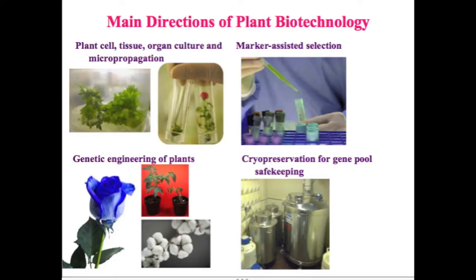There are four main directions of plant biotechnology: number one is plant cell, tissue, organ culture and micropropagation; number two is marker assisted selection; number three is genetic engineering of plants; number four is cryopreservation for gene pool safekeeping.